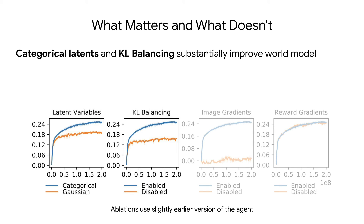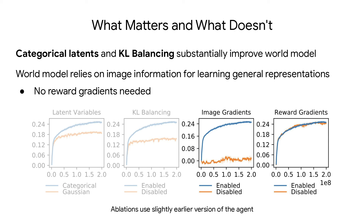To understand which components of DreamerV2 are important, we conduct an ablation study and find that categorical latents and KL balancing both substantially improve the world model. Moreover, we find that the world model completely relies on image gradients for learning its representations, and reward gradients are not needed, suggesting that the world model learns general representations that could be useful for other tasks as well.